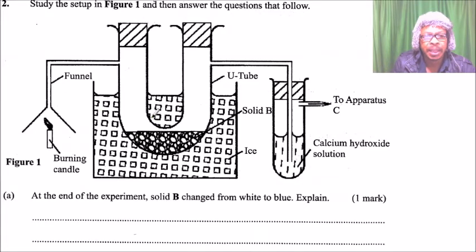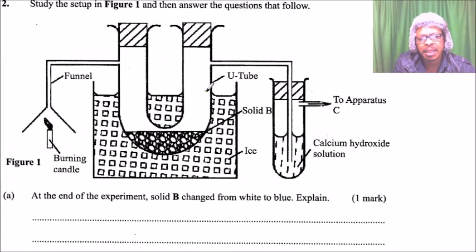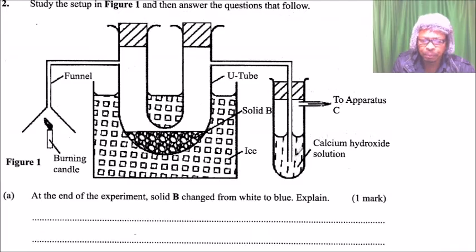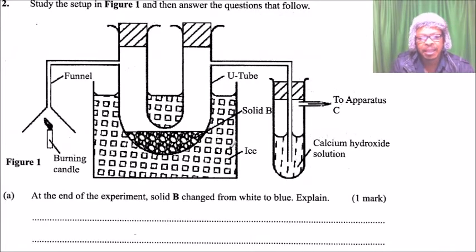This is question number two. We are told to study the setup in figure one and then answer the questions that follow. We have a system set up here with a burning candle, a funnel, solid B, a connecting tube joining the solution named calcium hydroxide, apparatus C, and ice.